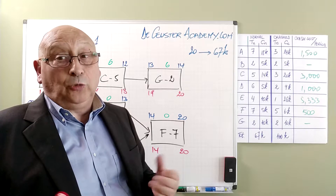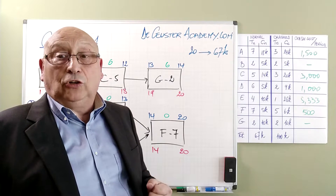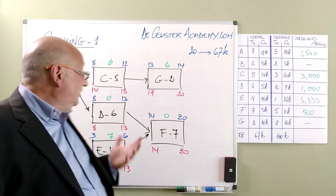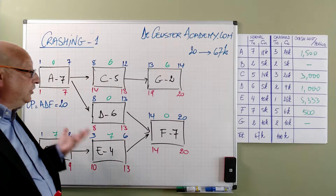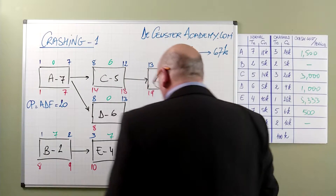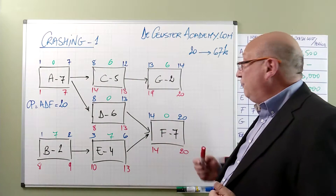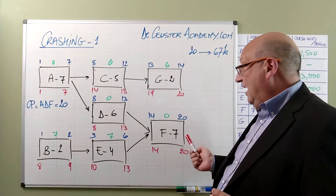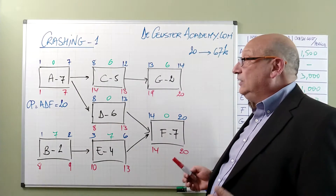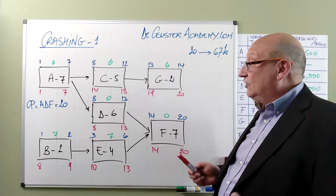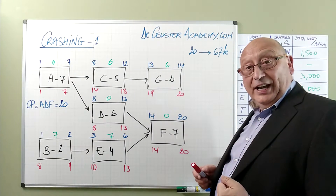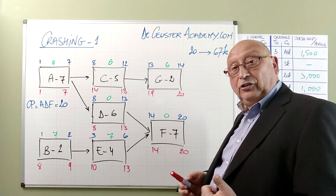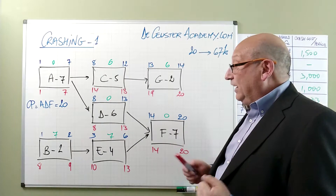We need to see which of those activities are on the critical path before we start crashing. This is the network diagram we are considering. Our project is composed of activities A to G, with three paths: ACG, ADF, and BEF. When we do the calculations, we find that the critical path is ADF with a duration of 20 periods. The total cost of the project without crashing is 67K.